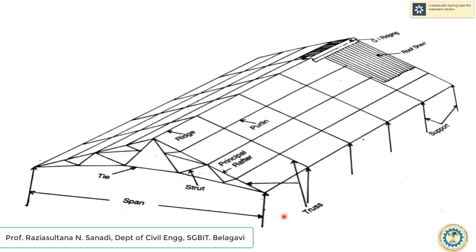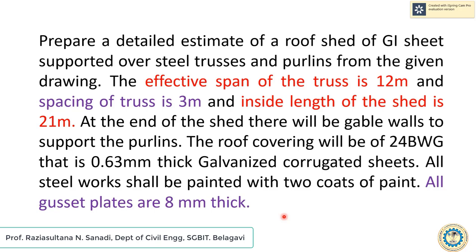Let us start with the problem now. The specifications given are: prepare a detailed estimate of a GI shed supported over steel trusses and purlins from the given drawing. The effective span of the truss is 12 meters, the spacing of the truss is 3 meters, and the inside length of the shed is 21 meters.